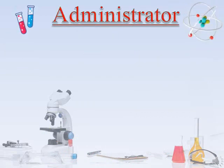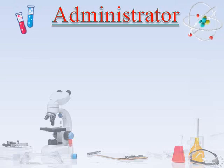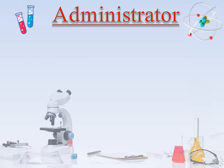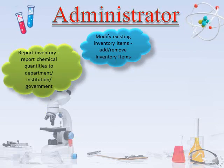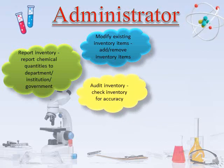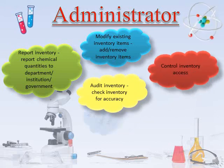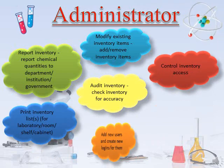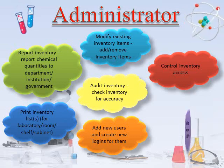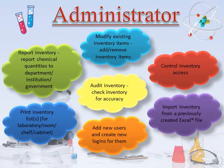Administrator: The administrator is the default first user login and has full access privileges to all settings and icons. This role should only be assigned to a few qualified and trusted persons within the institution. Administrator privileges include the ability to modify, add, or remove inventory items; report chemical quantities to department, institution, or government; audit inventory for accuracy; control inventory access; print inventory lists for laboratory, room, shelf, or cabinet; add new users and create new logins; and import inventory from a previously created Excel file.